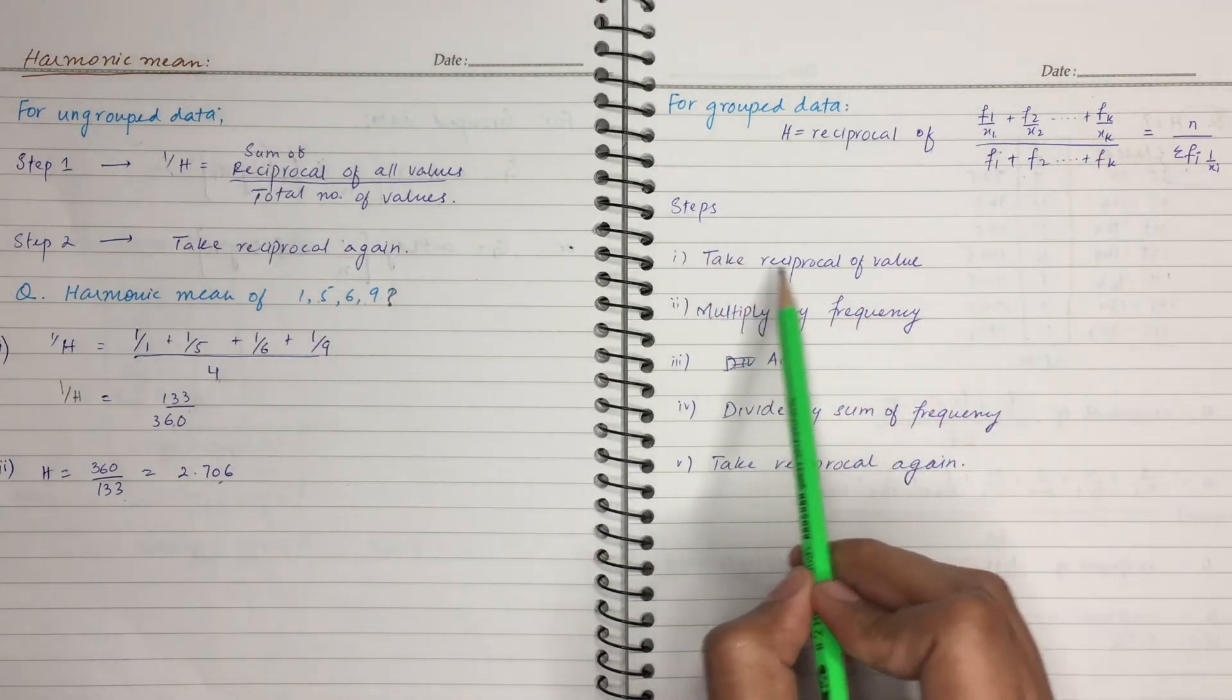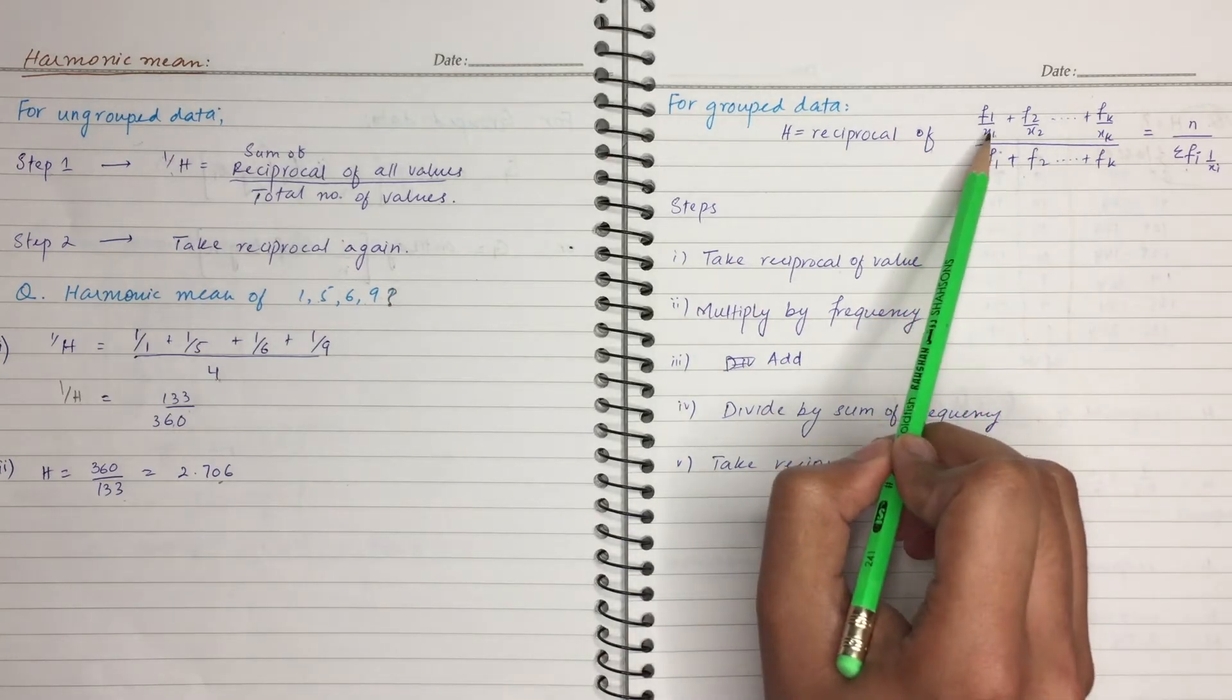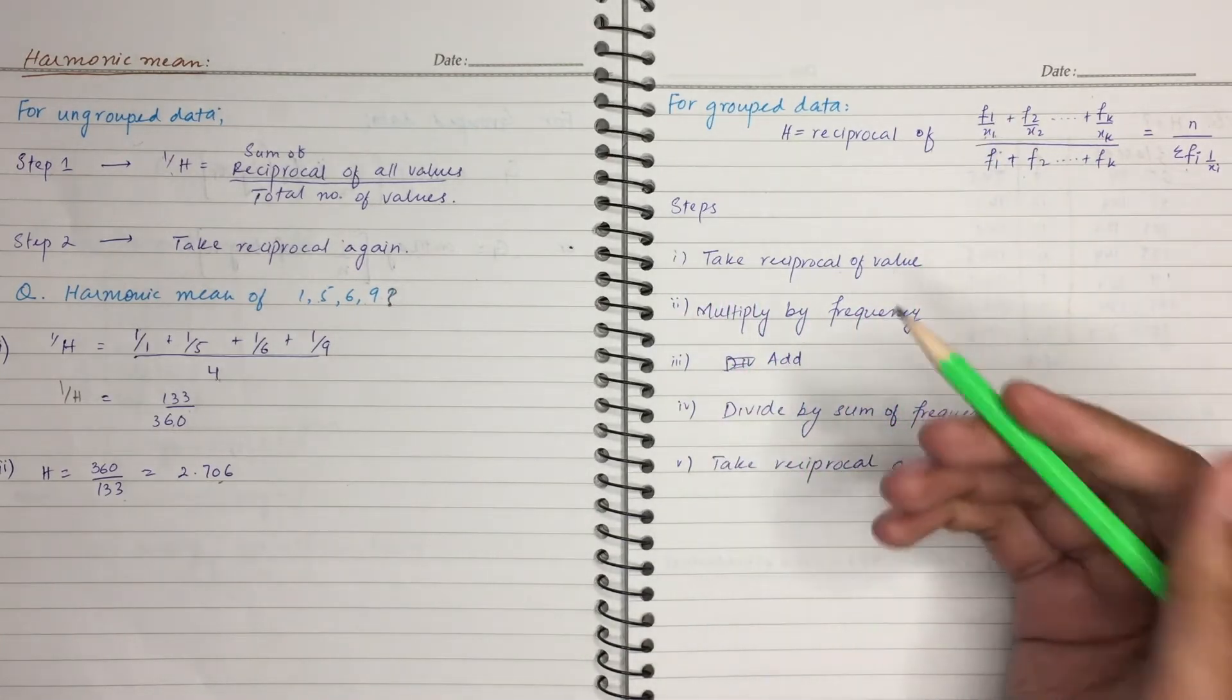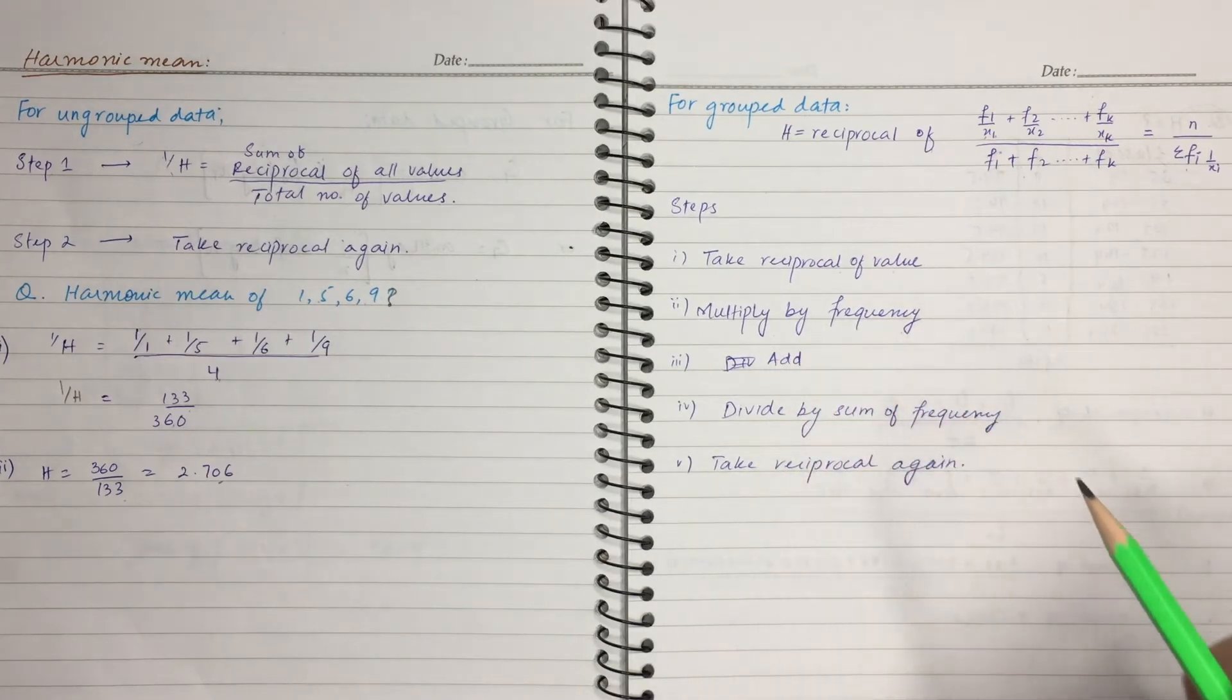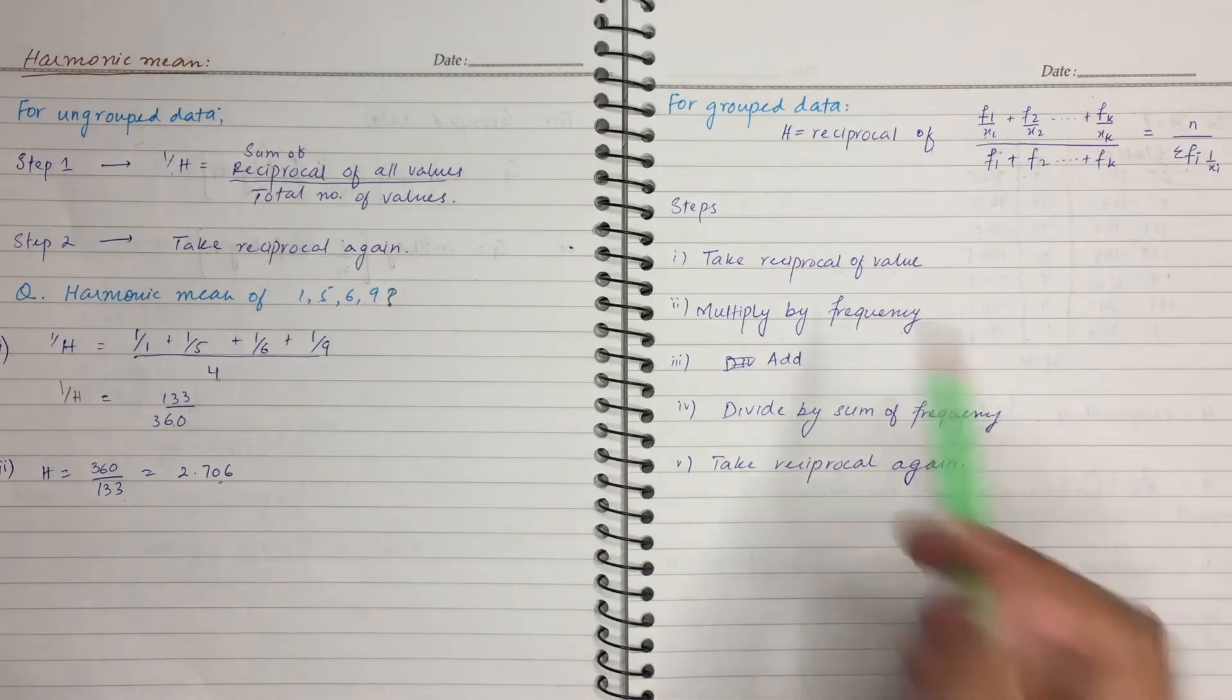Now, we will see the steps that we have to take the reciprocal of values. For example, we have reciprocal of the frequency. Where are we multiplying by frequency? We take reciprocal.